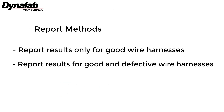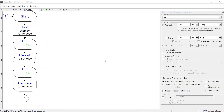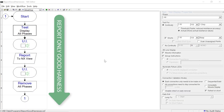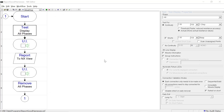There are several types of report methods that can be defined in the workflow. This video will explain the two most common report methods. This workflow will generate a report only when a wire harness passes all tests. In this scenario, the test workflow cell does not advance until all connections are validated.